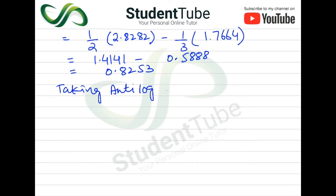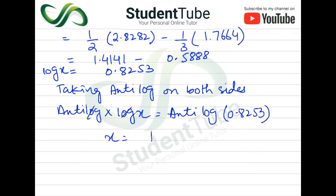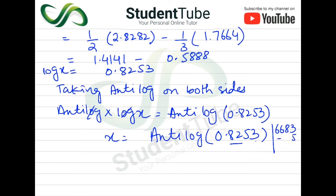Taking antilog on both sides: antilog और log cancel हो जाते हैं, तो x = antilog(0.8253). Antilog table में 82 को देखें: value है 6683, then mean difference में 3 के लिए value 5 add करेंगे — 6688. Characteristic 0 है, इसलिए x = 6.688 is the answer.